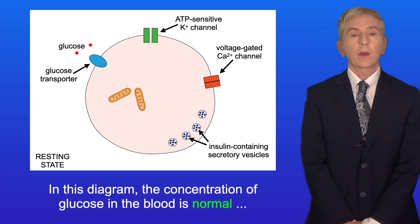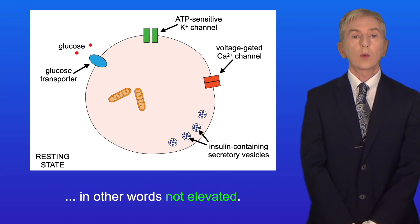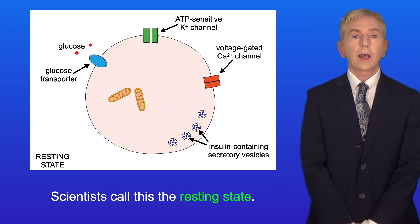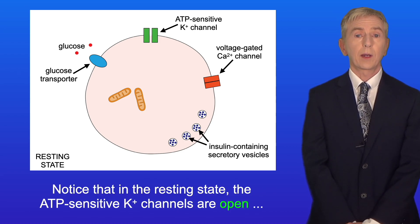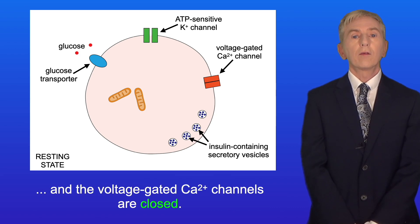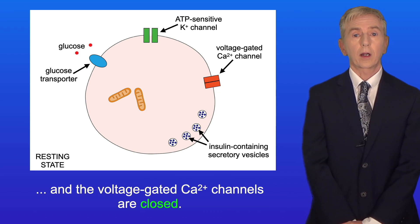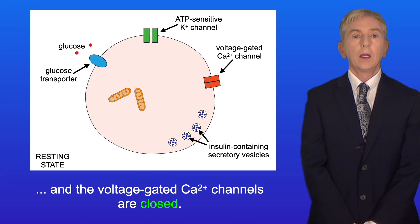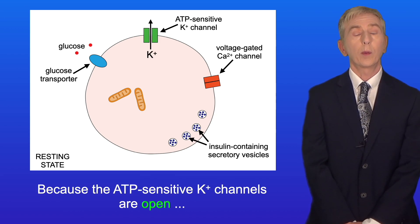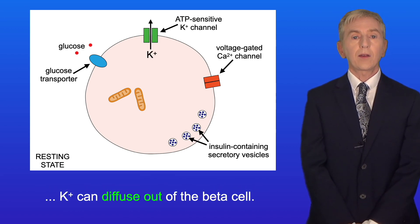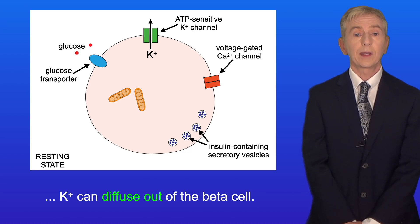In this diagram the concentration of glucose in the blood is normal — in other words, not elevated. Scientists call this the resting state. In the resting state the ATP-sensitive potassium ion channels are open and the voltage-gated calcium ion channels are closed. Because the ATP-sensitive potassium ion channels are open, potassium ions can diffuse out of the beta cell.